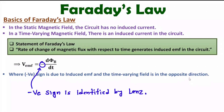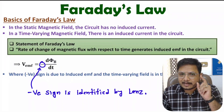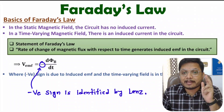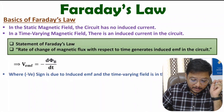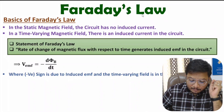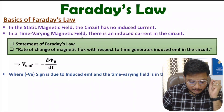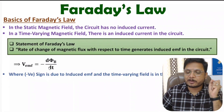That negative sign was discovered by Lenz. So Faraday explained that induced EMF due to a time-varying magnetic field is the negative of the rate of change of magnetic flux with respect to time.